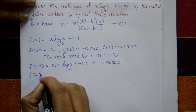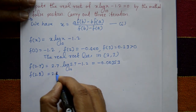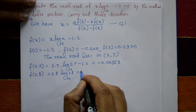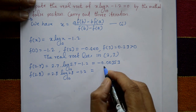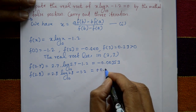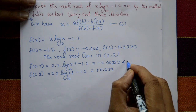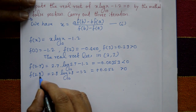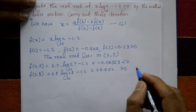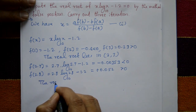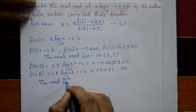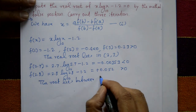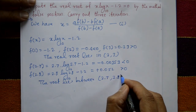Now evaluate f(2.8): 2.8·log₁₀(2.8) - 1.2 = +0.052. Since f(2.7) < 0 and f(2.8) > 0, the root lies between 2.7 and 2.8.